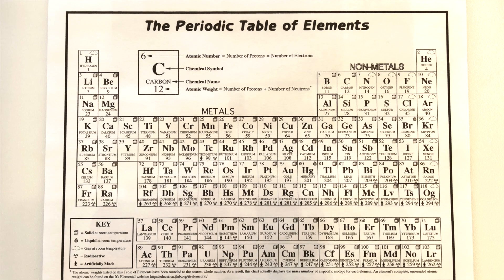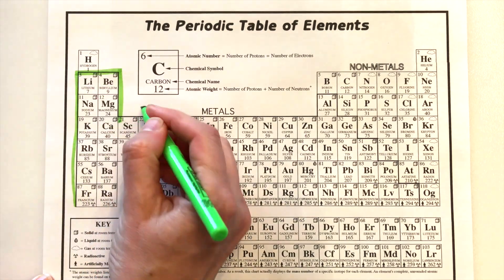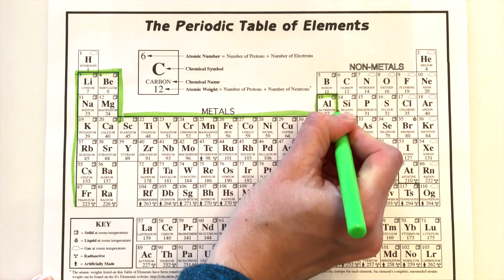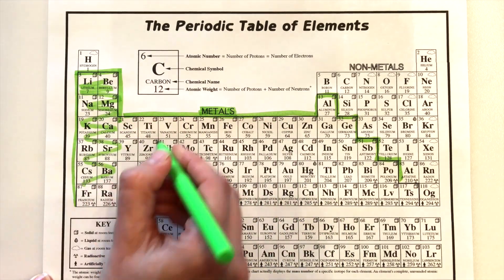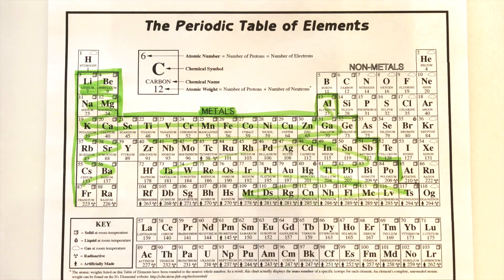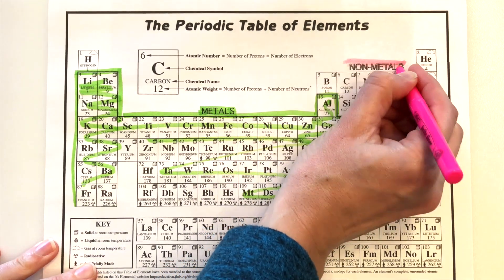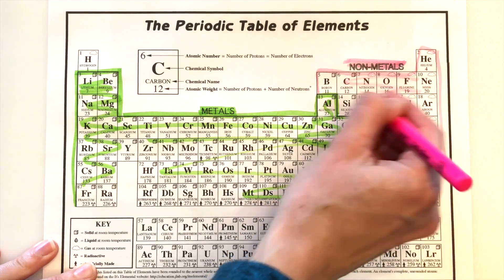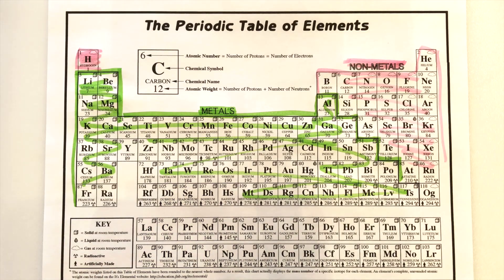The third trend is that metals are found on the left-hand side of the periodic table and nonmetals are found on the right-hand side. There's a bold staircase line — all elements to the left of the staircase are metals, and all elements to the right of the staircase, plus hydrogen, are nonmetals.